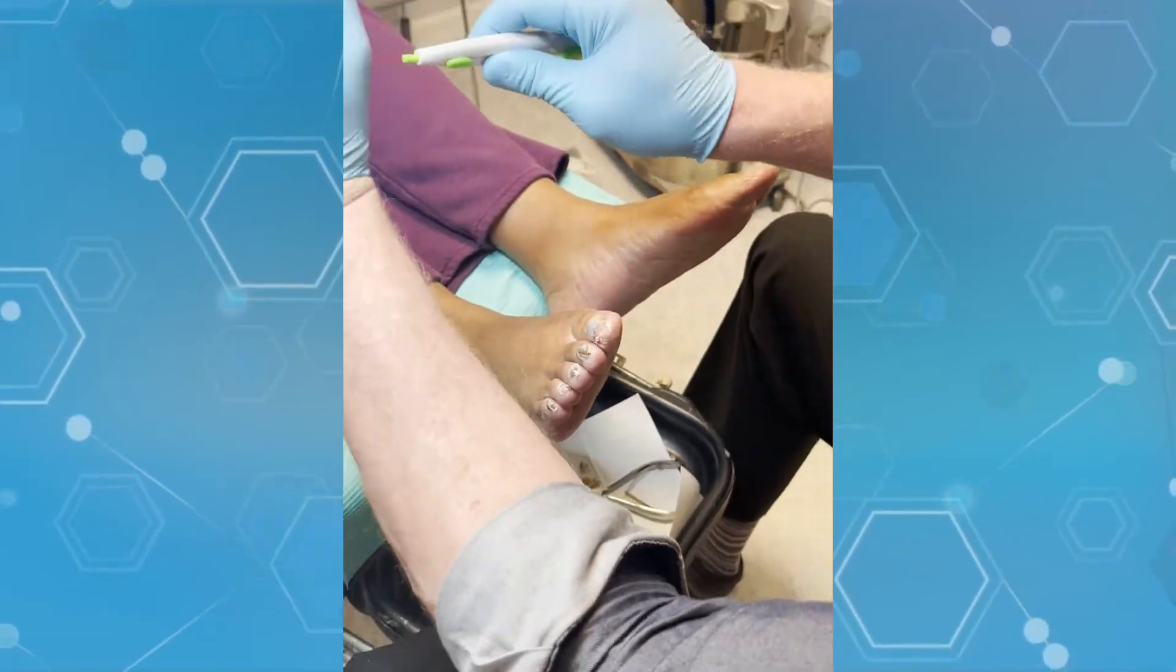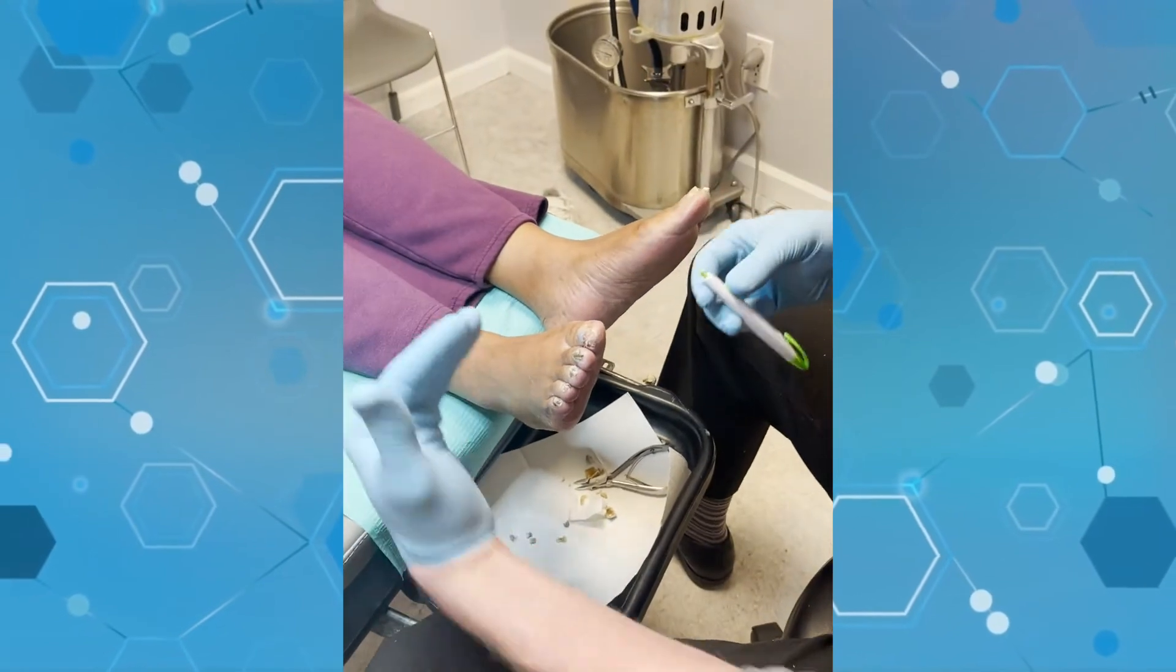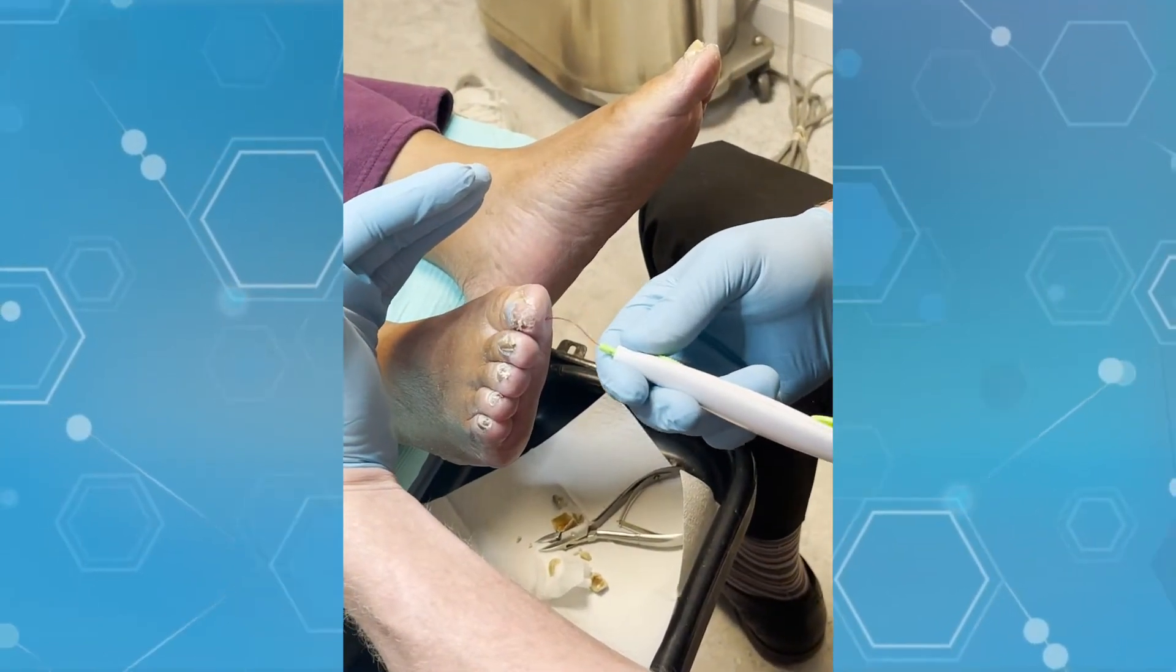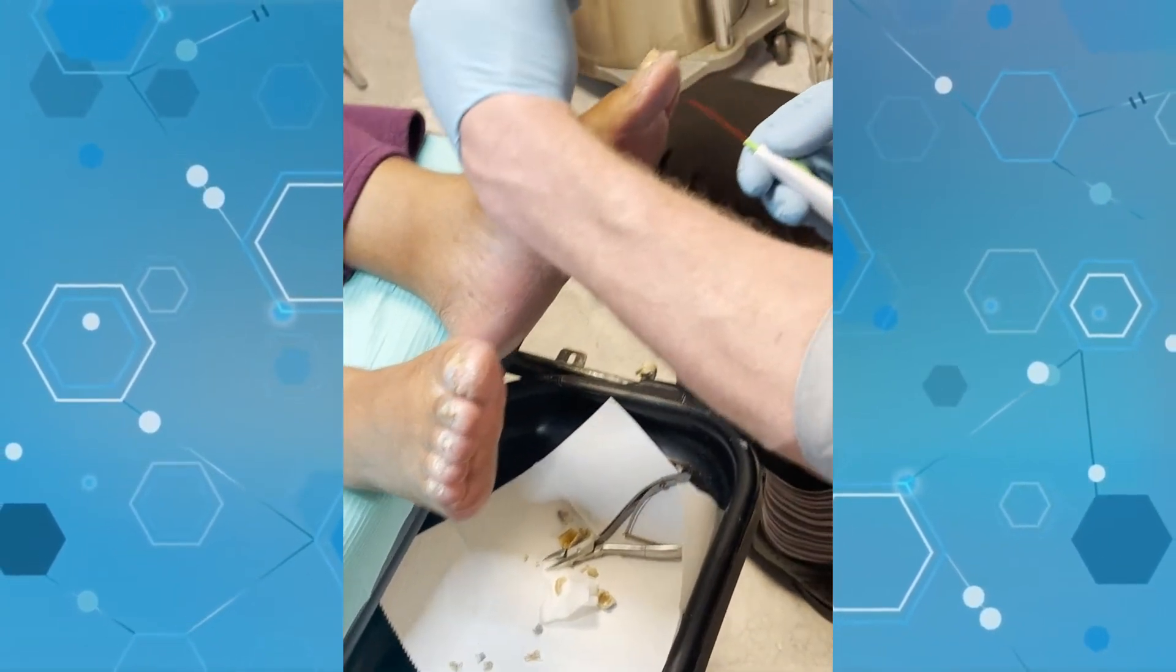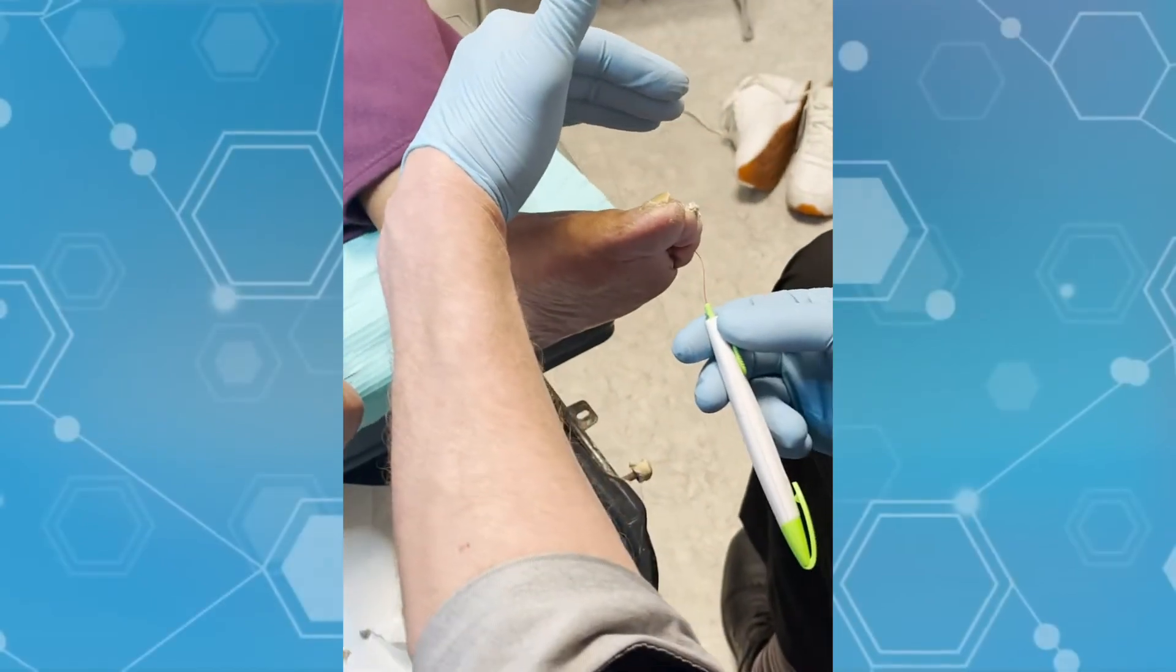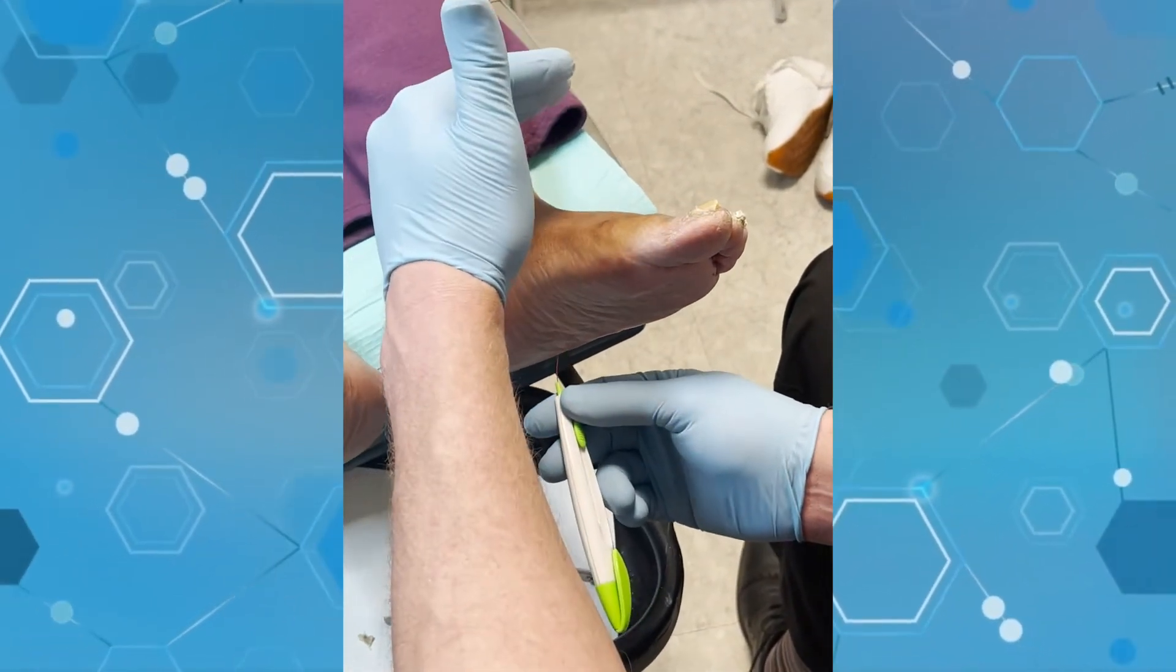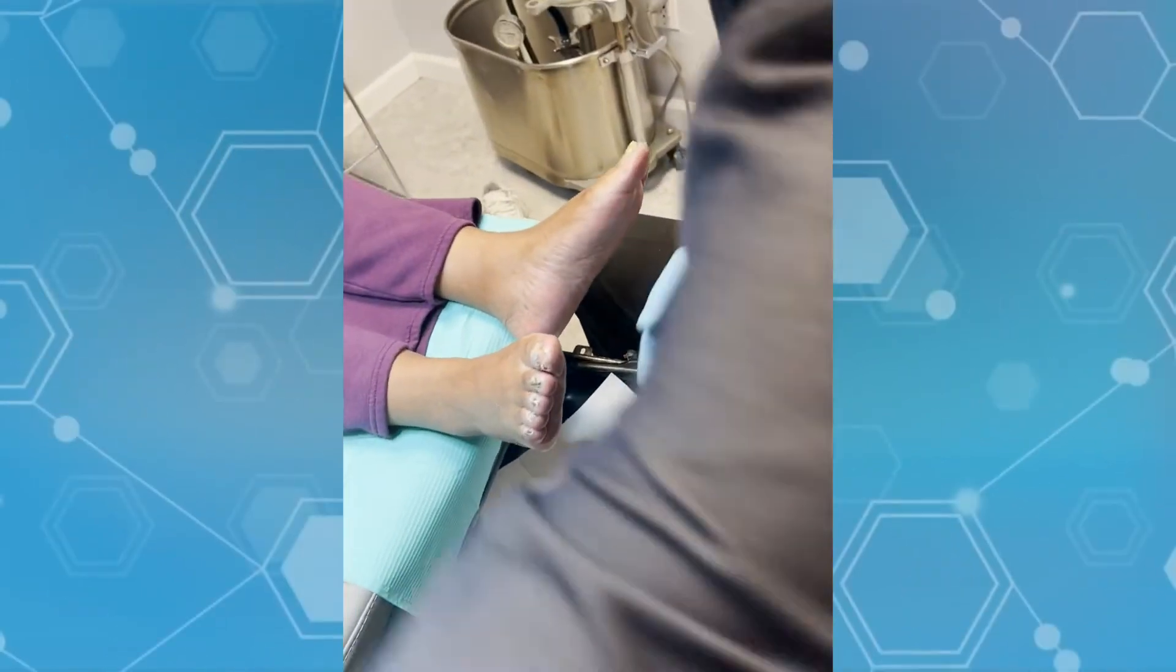Here at this part of the examination, we're doing what is called the Semmes-Weinstein monofilament test. We're using the Semmes-Weinstein monofilament - we have a 10-gram monofilament for this one. Gerilyn, would you like to tell us what this is for? Yes, it's an objective test. It's a simple instrument that's used to touch the foot. It's used in the screening for diabetic foot loss of protective sensation.